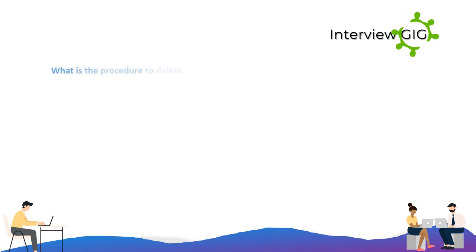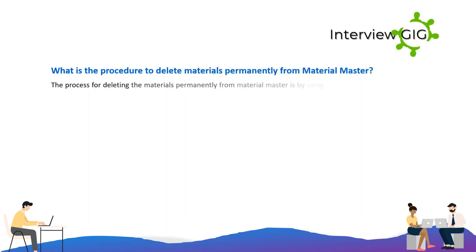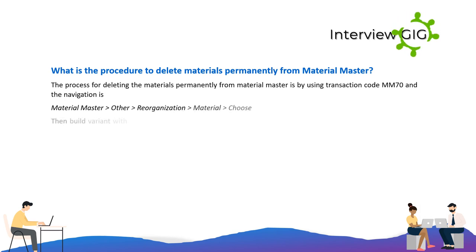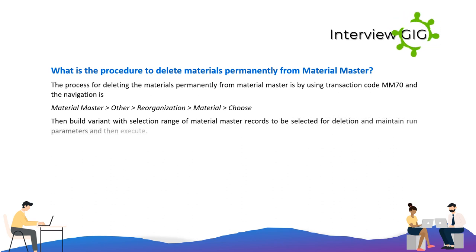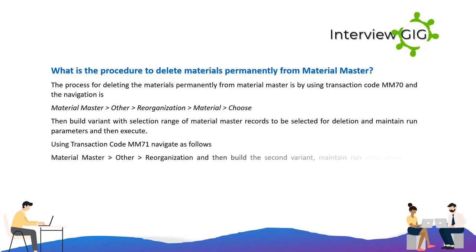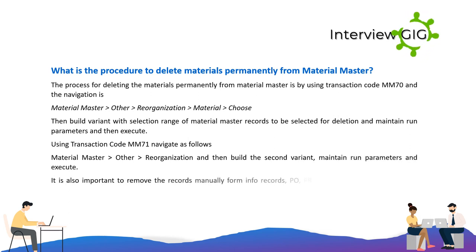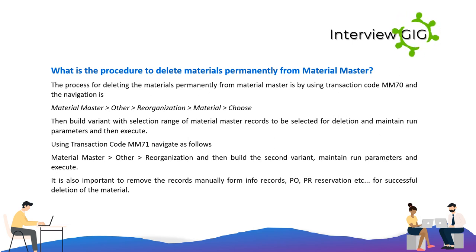What is the procedure to delete materials permanently from the material master? Using transaction code MM70, navigate to: Material Master > Other > Reorganization > Material > Choose, then build a variant with selection range of material master records to be deleted, maintain run parameters, and execute. Using transaction code MM71, navigate to Material Master > Other > Reorganization, then build the second variant, maintain run parameters and execute. It is also important to remove records manually from info records, PO, PR reservation, etc., for successful deletion of the material.